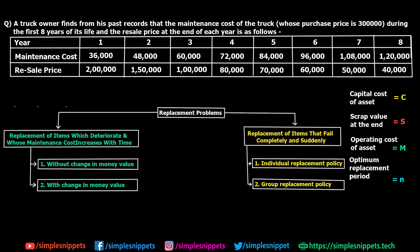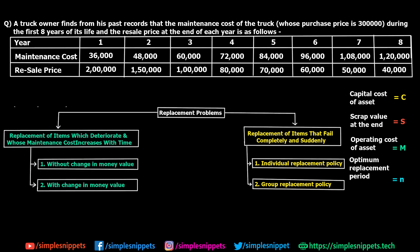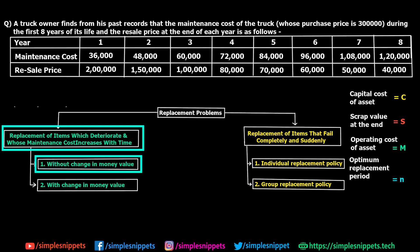In this video we are going to solve a problem on type 1, which has two variations. The first variation is when the money value does not change over time, and the second is when money value changes over time. This numerical is based on when money value does not change, so it's simpler. The second type will be covered in the next video.